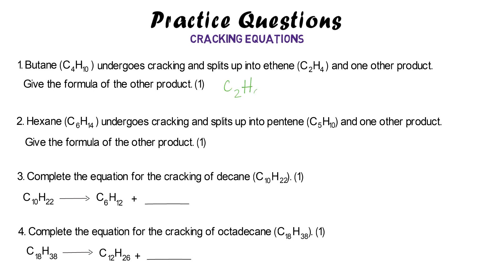For the first one: started with four carbons, used two, two left; started with 10 hydrogens, used four, six left — answer is C2H6. Second example: one carbon left and four hydrogens — CH4. Third one: four carbons left and 10 hydrogens — C4H10. Last one: six carbons left and 12 hydrogens — C6H12.